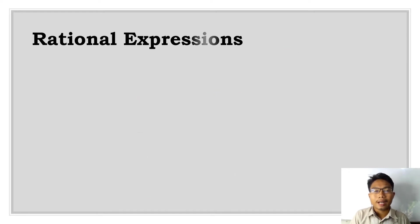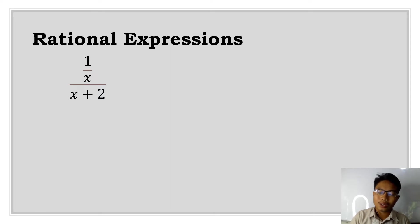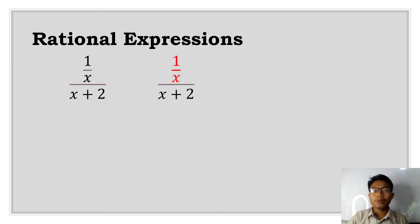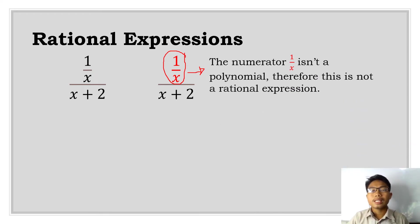Consider 1 over x all over x plus 2. At first glance, you might wonder if this is a rational expression. The numerator, 1 over x, cannot be considered a polynomial. Therefore, this expression as written is not a rational expression, because both the numerator and the denominator must be polynomials.